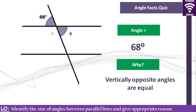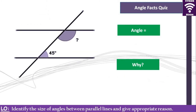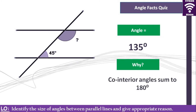The second question: you have an angle marked 45 degrees. What is the size of the angle with a question mark? It's 135 degrees. How did we find 135? These are co-interior angles. Co-interior angles add up to 180 degrees. So we find this by subtracting 45 from 180, and we get 135.